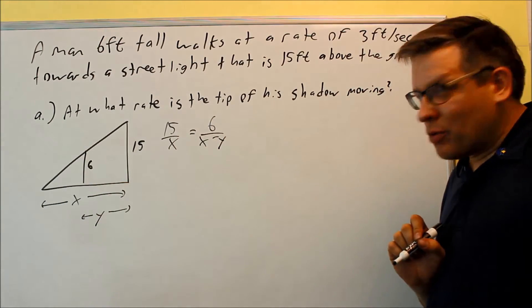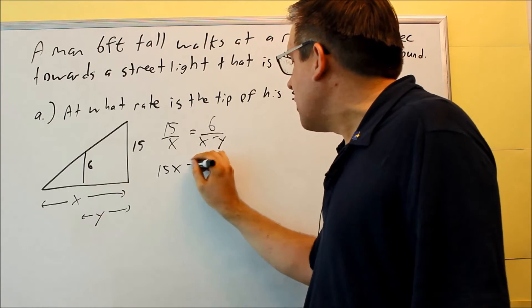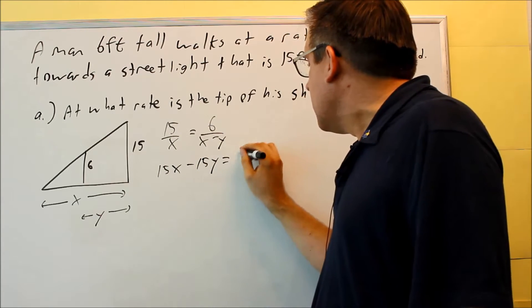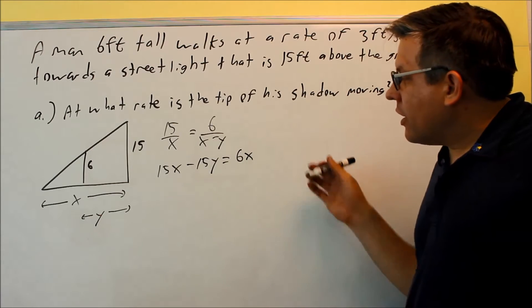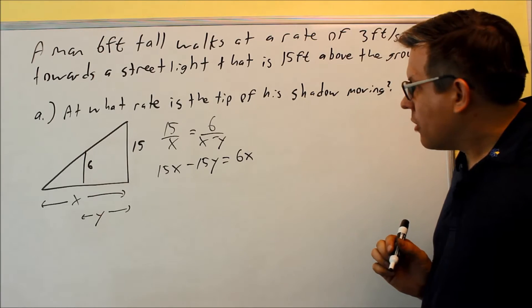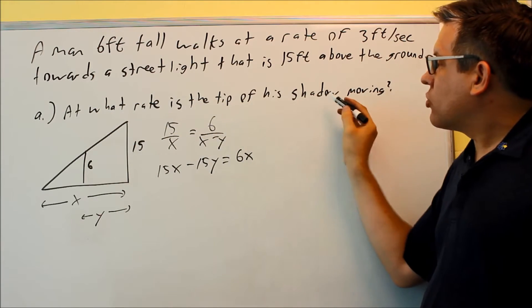I want to cross multiply this. So I'm going to multiply this across. I get 15x minus 15y equals 6x. And ideally I'd like to solve for x here because let's look at part a. It says at what rate is the tip of a shadow moving.